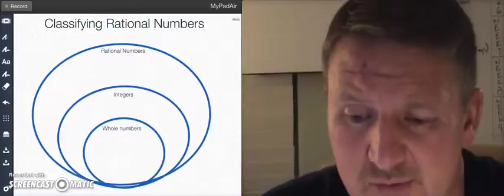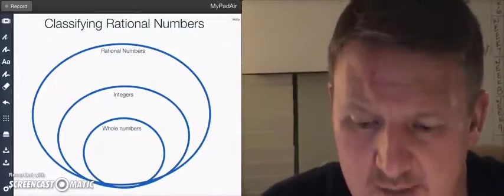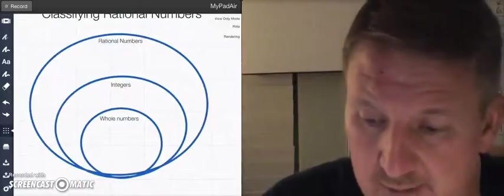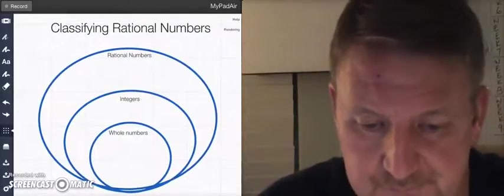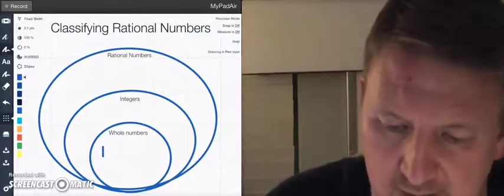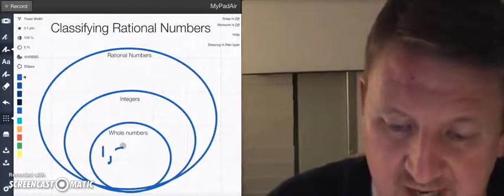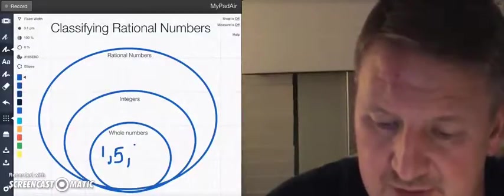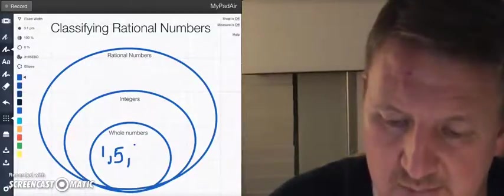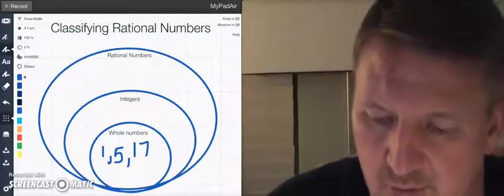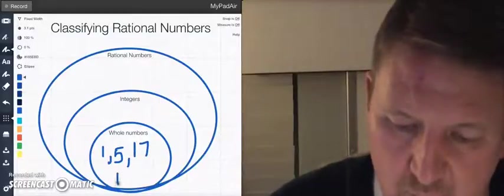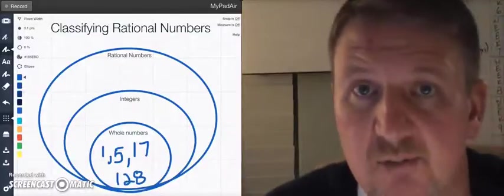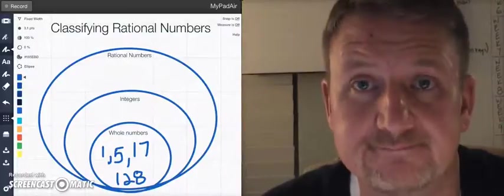Whole numbers are numbers that are to the right of zero on the number line. Numbers like one would be a whole number. If I had five, would be a whole number. 17 could be a whole number. You could also have 128. All these are whole numbers because they're numbers that are to the right of zero on the number line.